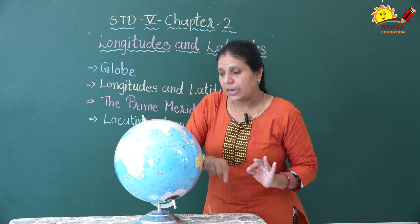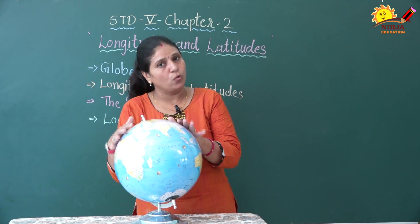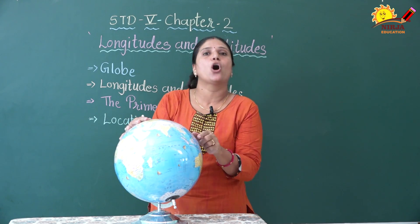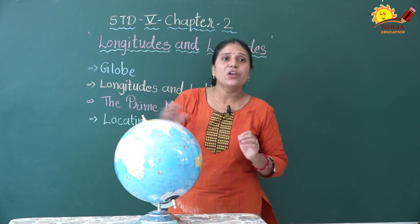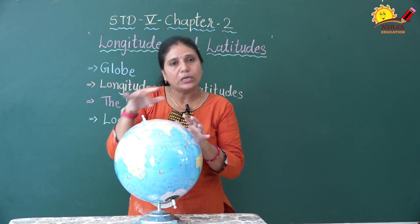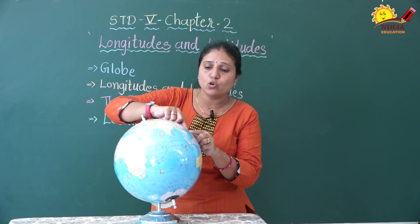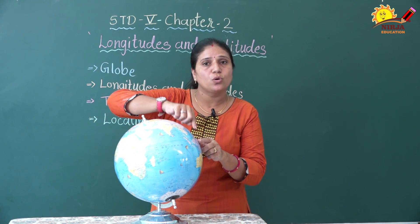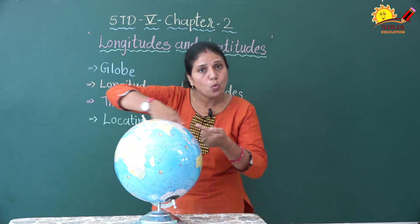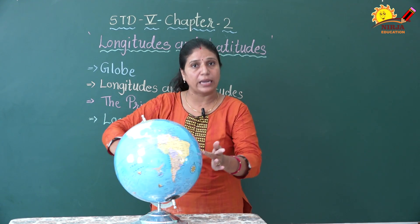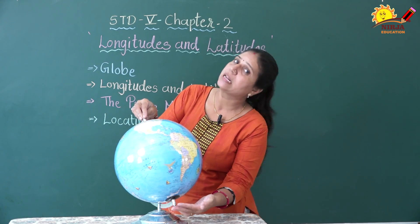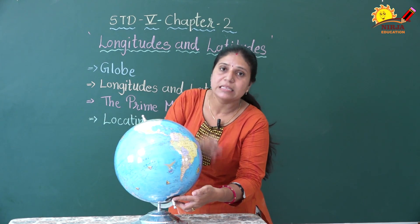How many longitudes can we see on the earth or globe? There are 360 lines of longitude we can see on our globe or earth. They are referred to as standard meridians, used to determine time all over the world. The earth takes a minimum of four minutes to move from one longitude to another. Our earth moves from east to west, and it has two poles: the top area is the north pole and the bottom area is the south pole.